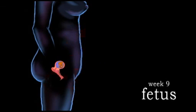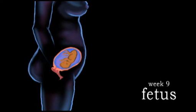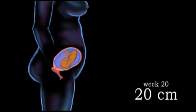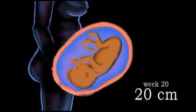Beginning at week nine, the embryo is called a fetus. By week 20, halfway through the pregnancy, the fetus is about 20 centimeters in length.